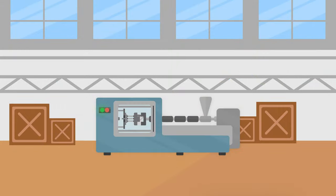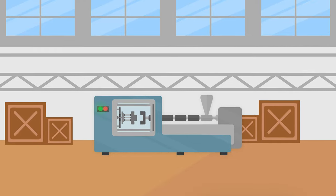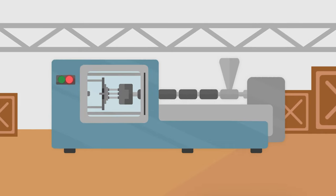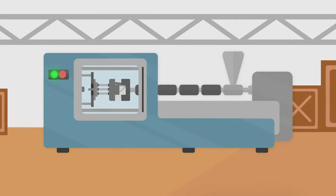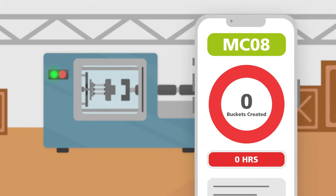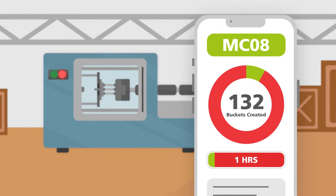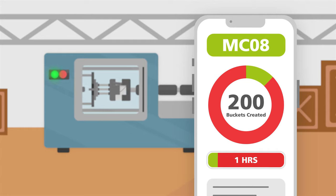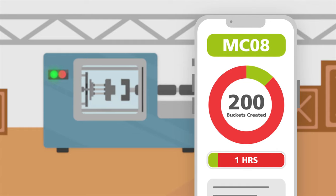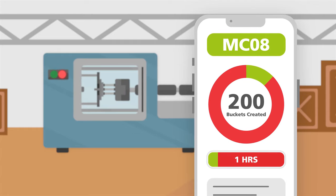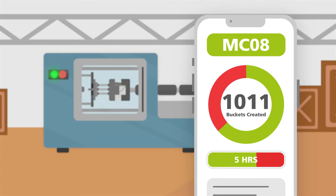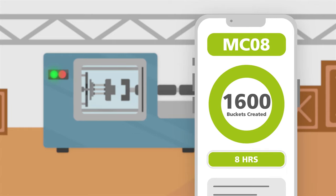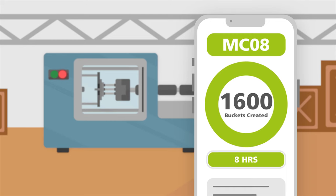Let's say you run a process which makes buckets and that your machine is capable of producing 200 buckets per hour. Across an 8-hour shift you should be able to make 1,600 buckets.